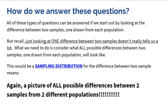To answer any of these questions, we have to take samples — we can't ask every single person out there what their blood pressure is or what their salary is. But just looking at one difference between two samples doesn't really tell us a whole lot. What we need to do is consider what all possible differences between two samples would look like. If I got a sample of men and women and looked at the salary difference, you might get something different from me, because that's what samples do — they vary. So we want a feel for what all possible differences look like, and this would be a sampling distribution.